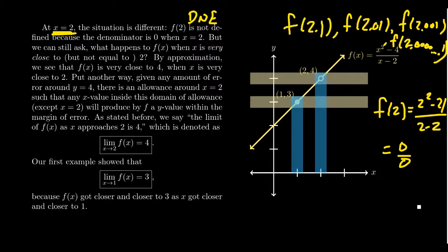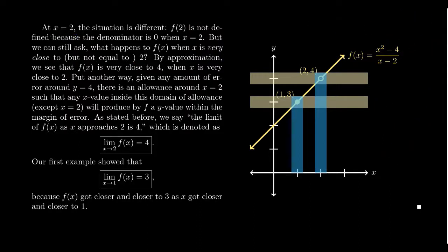If we get really close, never actually equaling, but if we get really close to two, the function's still defined. As we get really close to two, it turns out the function will get really close to y equals four. So even though f of two is undefined, there is a number that kind of suggests what it ought to be.